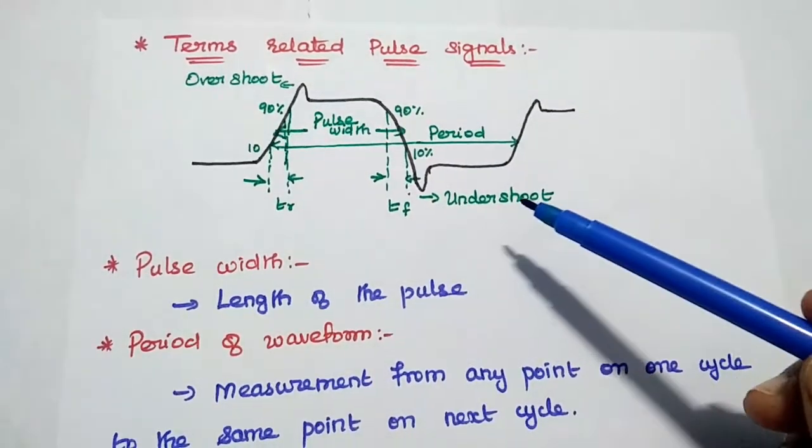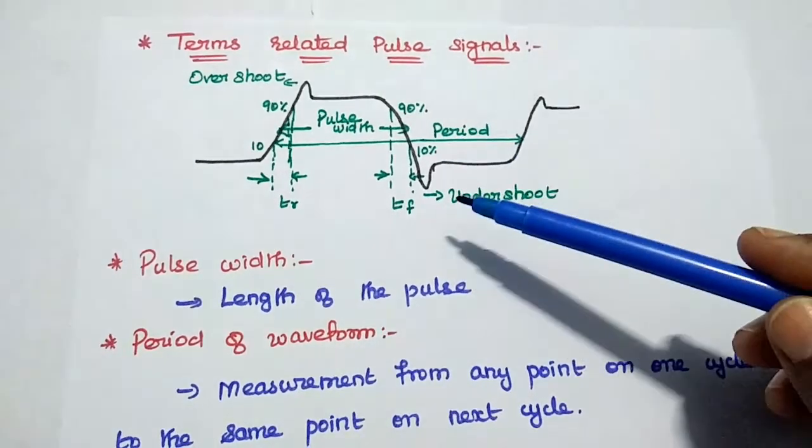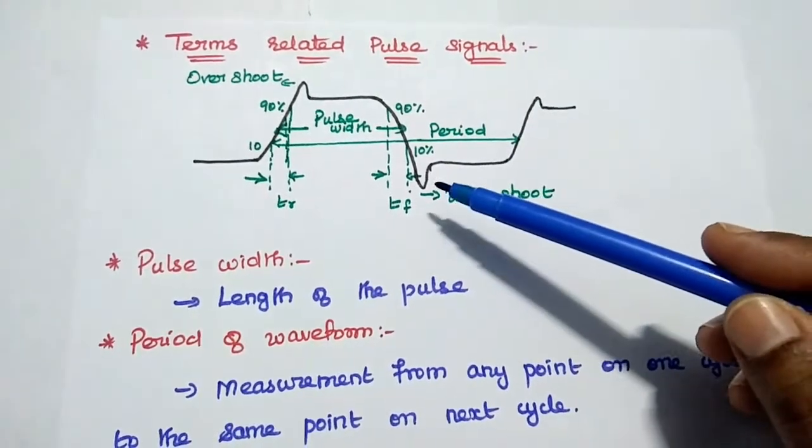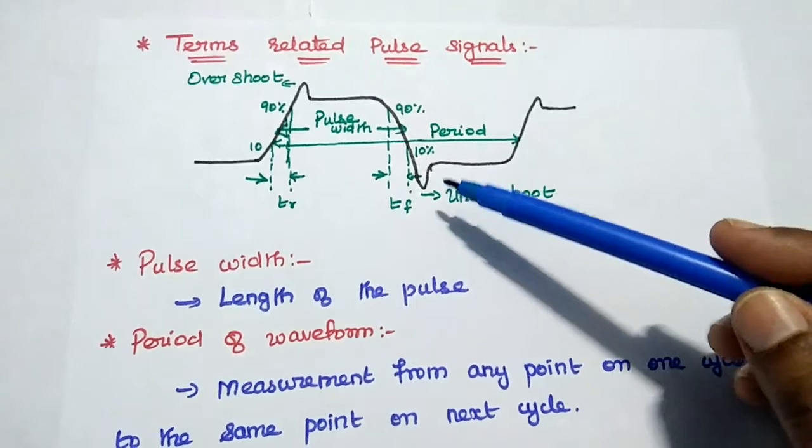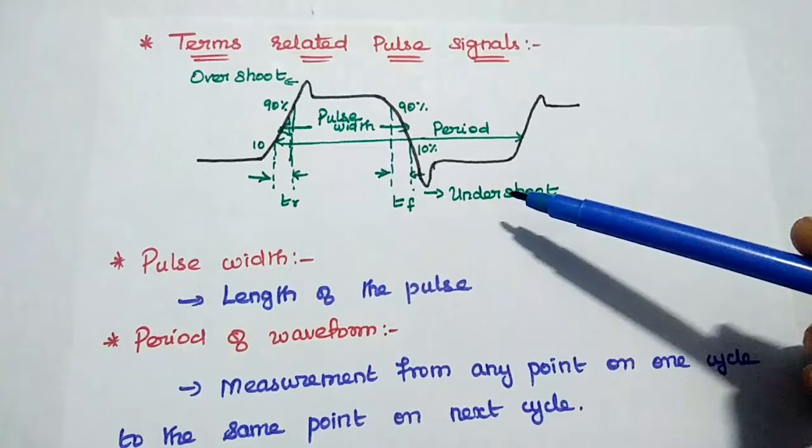Here undershoot. Undershoot occurs when the trailing edge, that is the falling edge of a waveform, exceeds its minimum value. This is called undershoot.